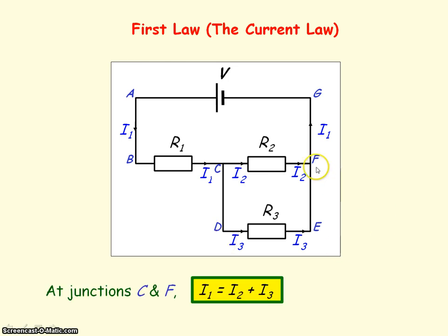At junction F, the currents entering it will be I2 and I3, and that will equal the current leaving junction F, which is I1.